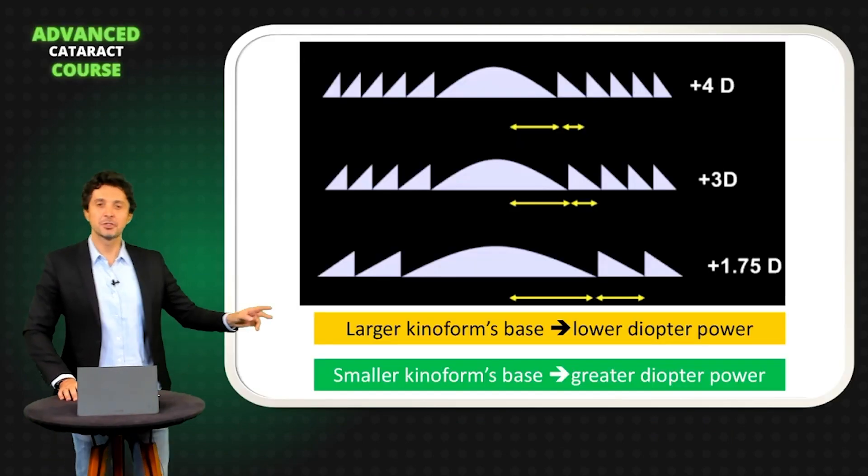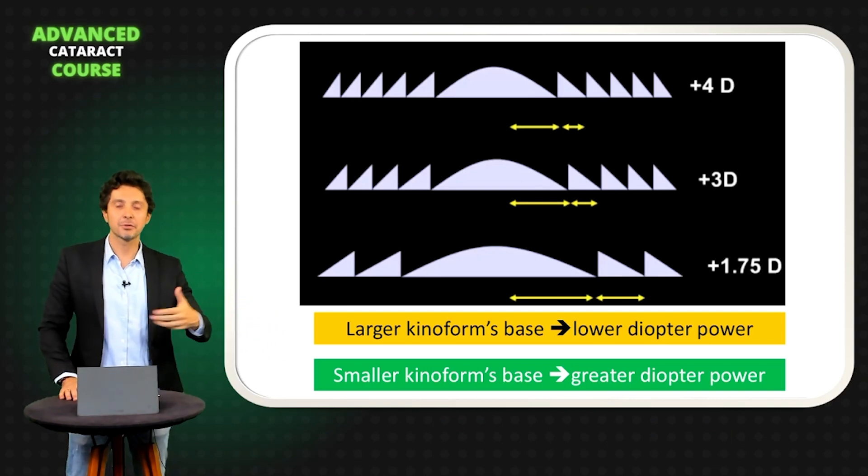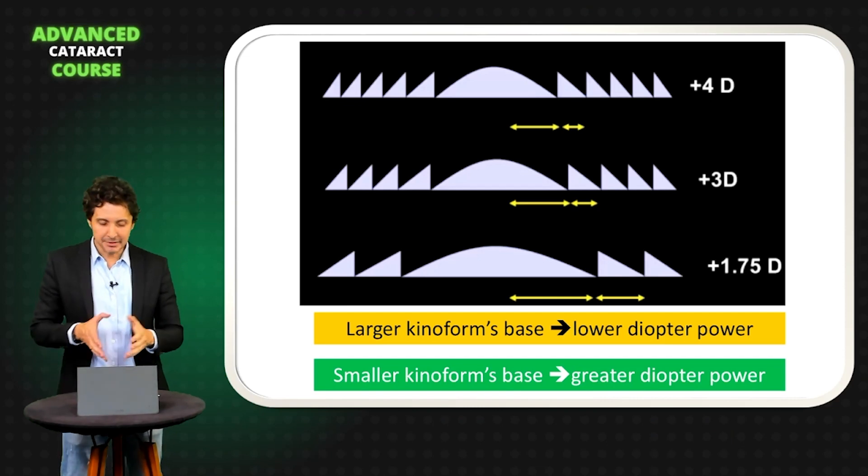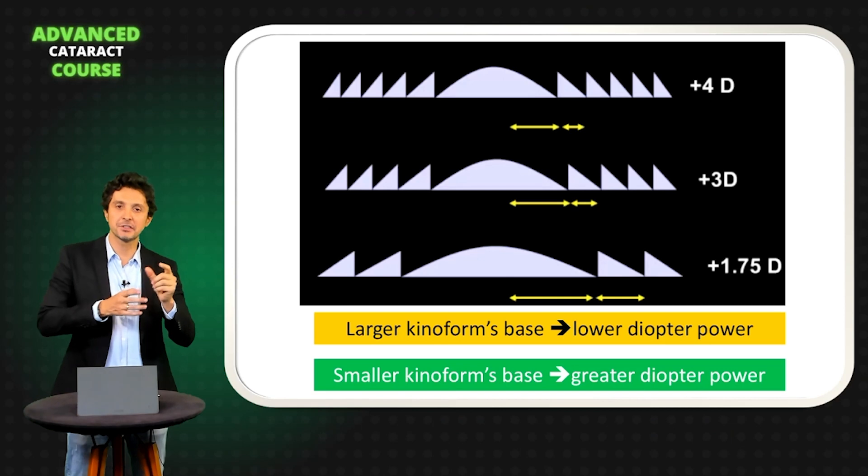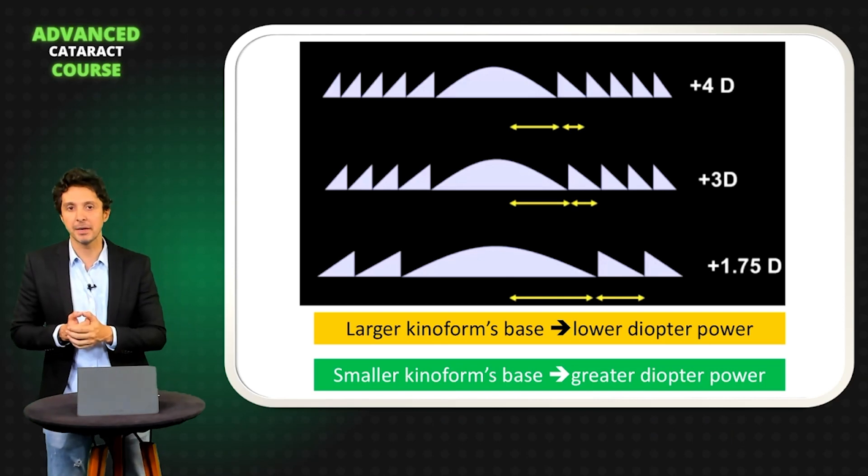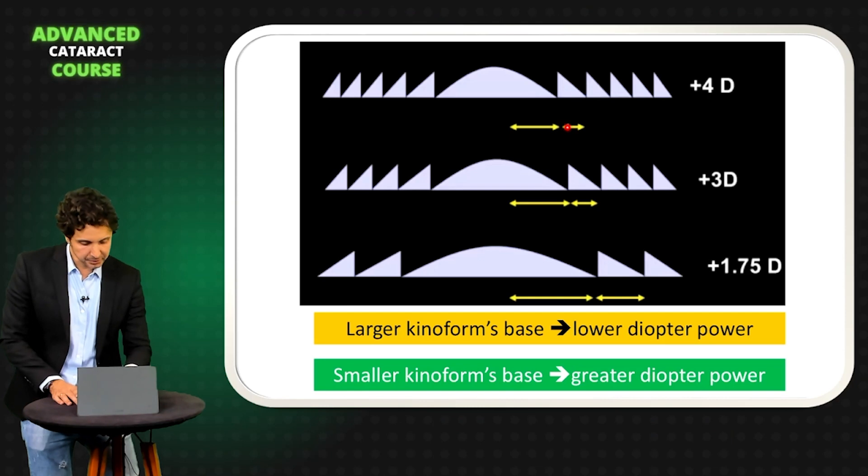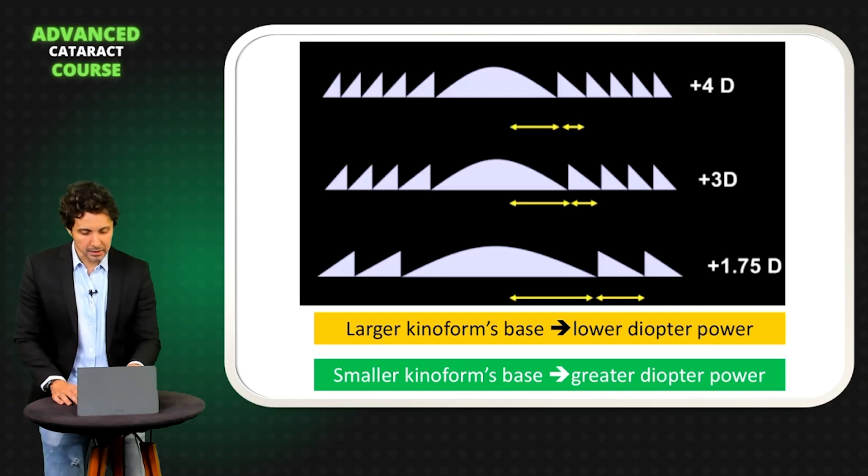Observe here. These two rules are important when you go to design a trifocal IOL. A larger kinoform base or larger diffractive ring base equals a lower diopter power. For example, this one. As you can observe here, this one is larger than these other two. So this one is 1.75 diopter.